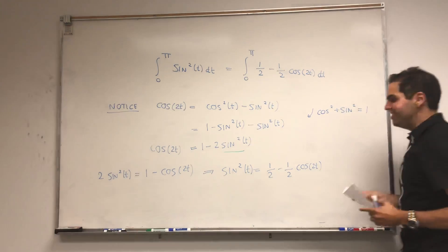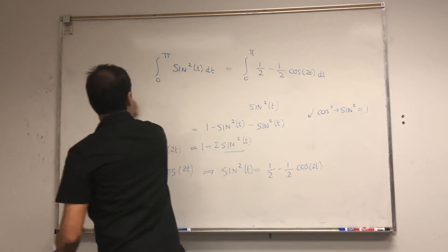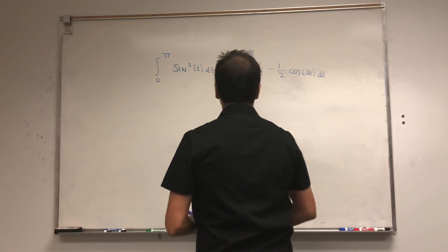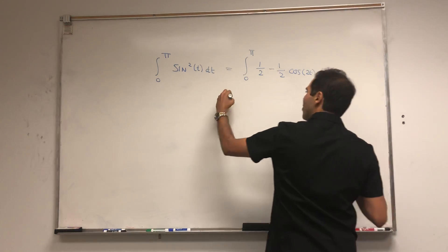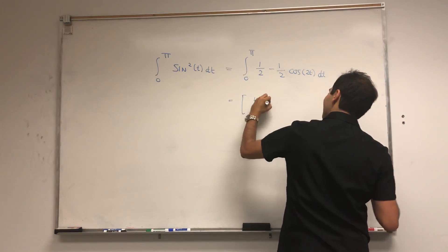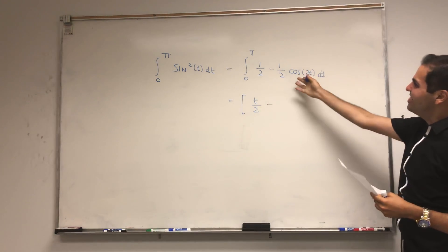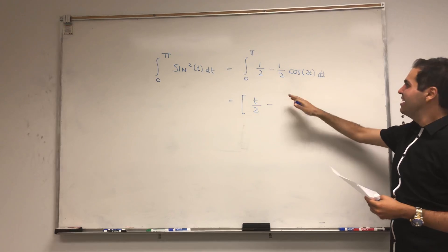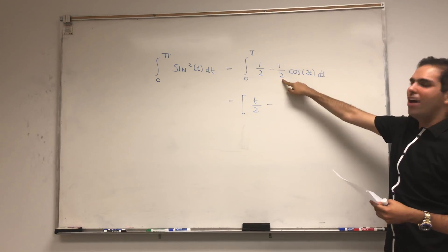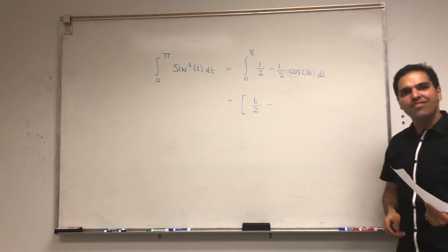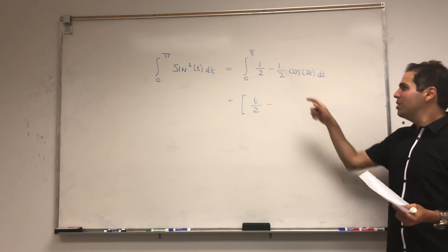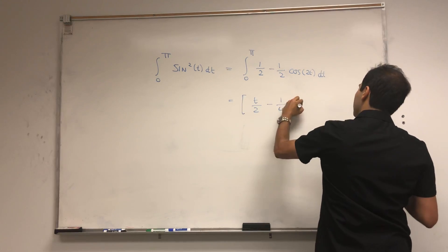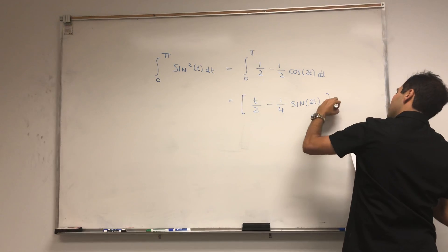Now it's much easier to find an antiderivative. An antiderivative of one half is t over 2. Be very careful here — you're tempted to say an antiderivative of cosine of 2t is sine of 2t times 2, but we want one half. If you differentiate sine of 2t, you get 2 cosine of 2t, so to get one half you need to divide by 4. So it's minus one-fourth sine of 2t, evaluated from 0 to pi.